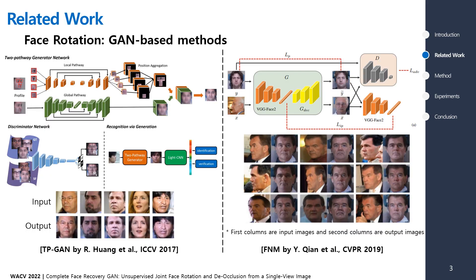GAN-based frontalization methods mainly aim to generate a frontal face image from profile face images. Thus, they require image datasets with paired frontal and profile face images. Furthermore, a MultiPIE dataset, which is a paired dataset, is usually used.